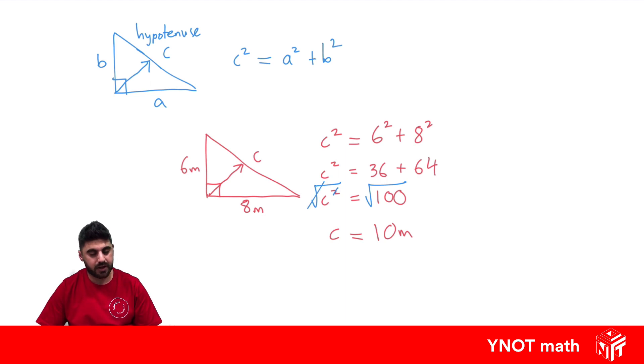And it is longer than 6 and 8, so it's a good idea. You know you've done it correctly if at least you've got the hypotenuse being the longest side.